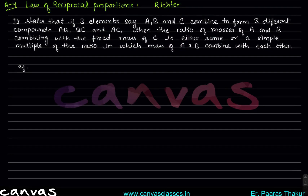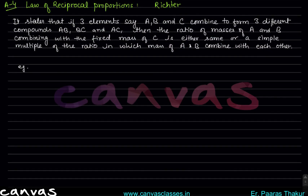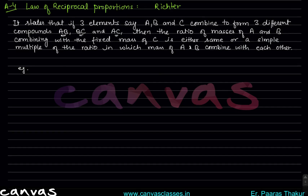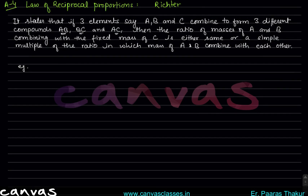Next we will talk about the law of reciprocal proportions. In this law, we have 3 elements A, B, and C that combine to form three compounds: AB, BC, and AC. Their ratios can be related to each other. We will continue the law of reciprocal proportions in the next lecture. Till then, read the basic theory and look at some examples from your books. See you in the next lesson — thank you, have a nice day!